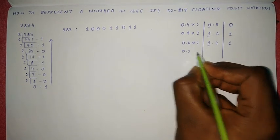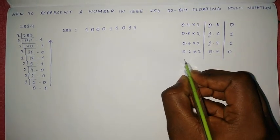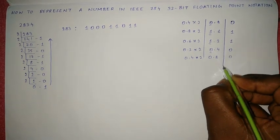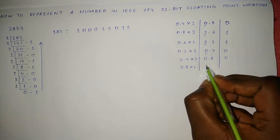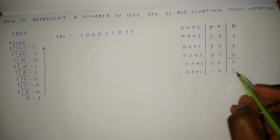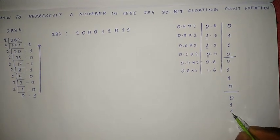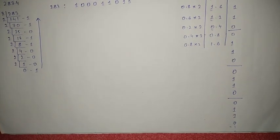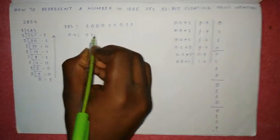Now for the fractional part: 0.4 multiplied by 2 gives 0.8, so the bit is 0. 0.8 multiplied by 2 gives 1.6, so the bit is 1. You can see these numbers are repeating, so the binary form of 0.4 is 0.0110011...